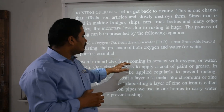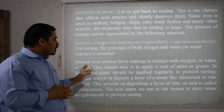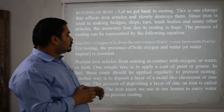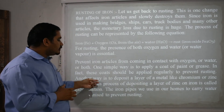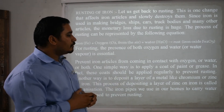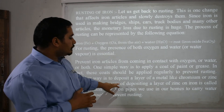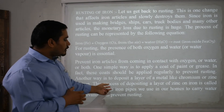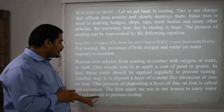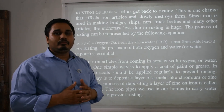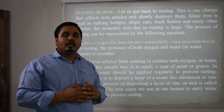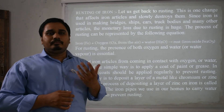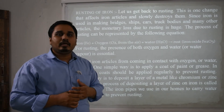To prevent iron particles from coming in contact with oxygen or water or both, one simple way is to apply a coat of paint or grease. These coats should be applied regularly to prevent rusting. Another way is to deposit a layer of metal like chromium or zinc on iron. This process of depositing a layer of zinc on iron is called galvanization. The iron pipes we use in our homes to carry water are galvanized to prevent rusting — they are prepared ready-made from the factory as galvanized pipes.